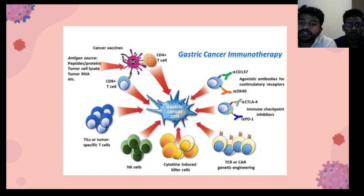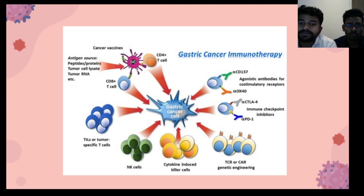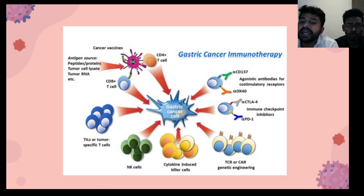Now in this slide we can see the importance of the dendritic cell vaccine. The antigen sources for the dendritic cell include peptides, proteins, tumor cell lysate, and tumor RNA. We can also see that CD4 and CD8 receptors act on tumor cells to destroy them.